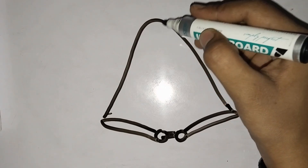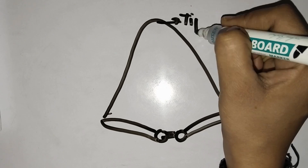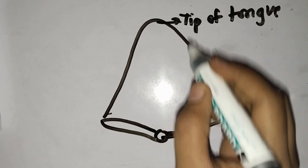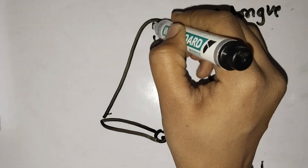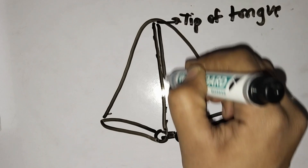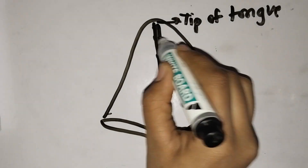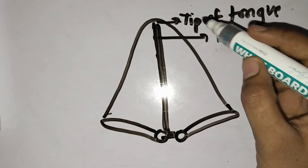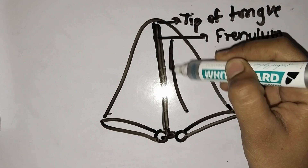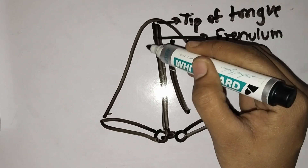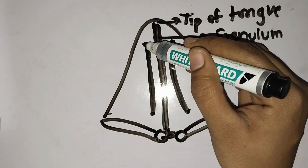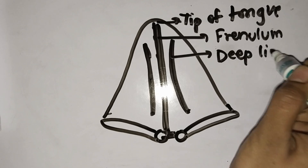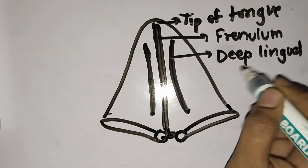Medially, this will be the tip of the tongue. We have three structures: the first structure is known as the frenulum. Then we have the presence of deep lingual veins on either sides of the frenulum.